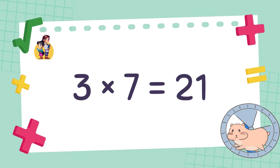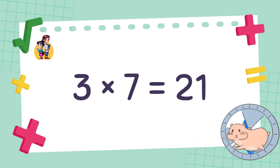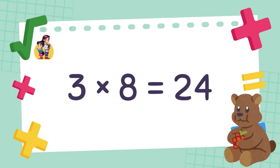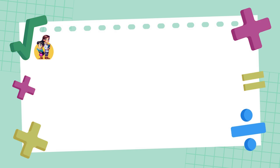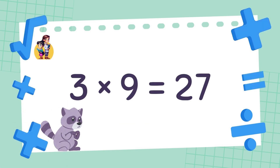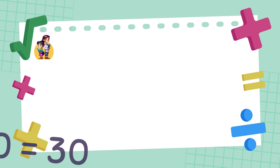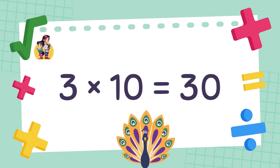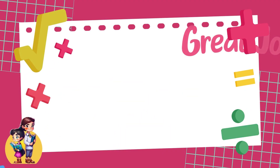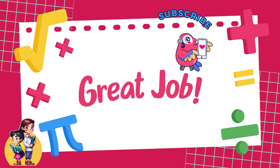3 times 7 is equal to 21. 3 times 8 is equal to 24. 3 times 9 is equal to 27. 3 times 10 is equal to 30. Great job!